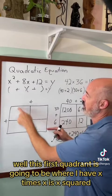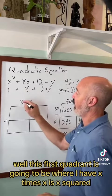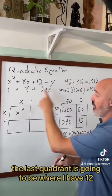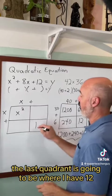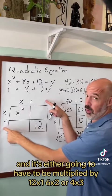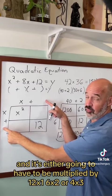Well this first quadrant is going to be where I have x times x is x squared. And the last quadrant is going to be where I have 12 and it's either going to have to be multiplied by 12 times 1, 6 times 2, or 4 times 3.